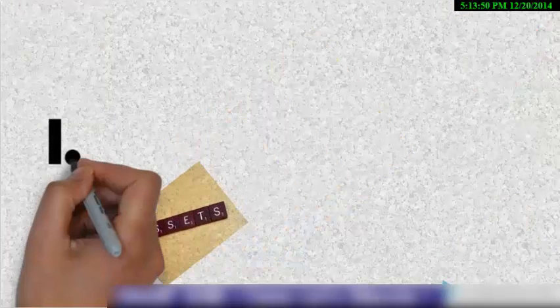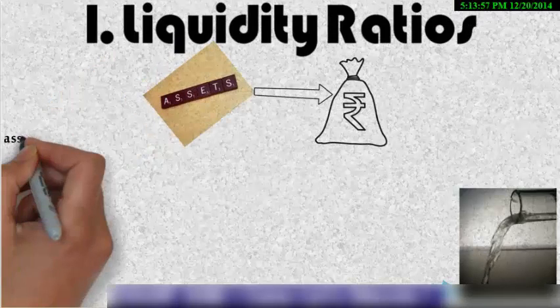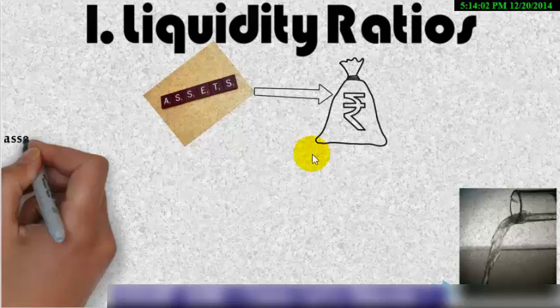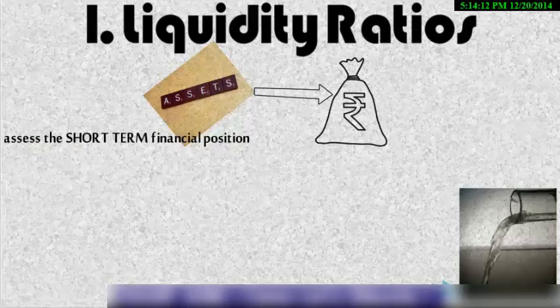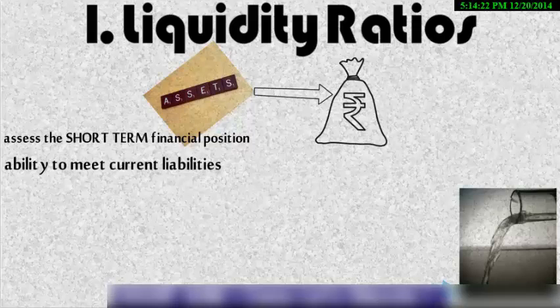So let's first discuss what is liquidity ratio and how it is beneficial and what are its advantages. So liquidity ratio tells us how easily an asset can be converted into cash with no loss. That is how asset can be converted into cash within a short period of time. So it tells us about the short term financial position that is the company's ability to meet short term liabilities that is the current liabilities of the company.